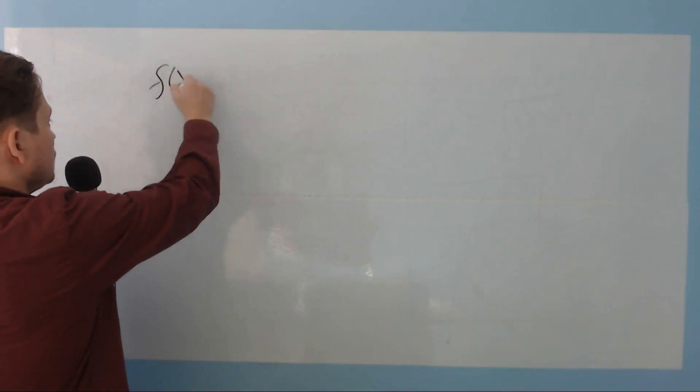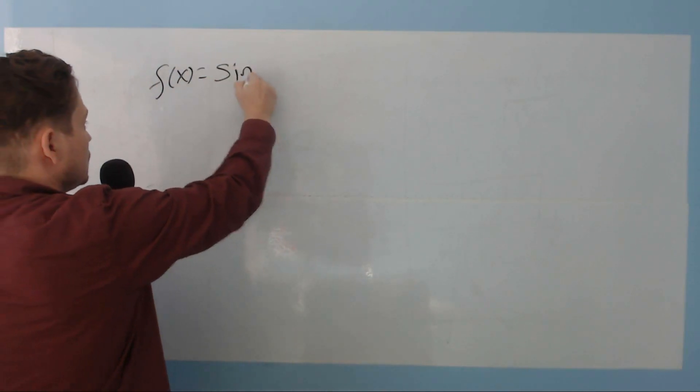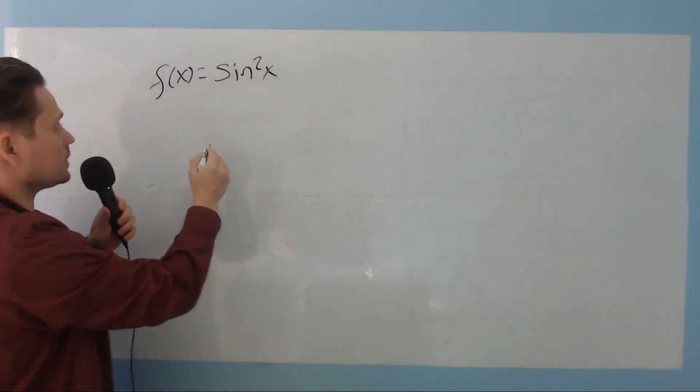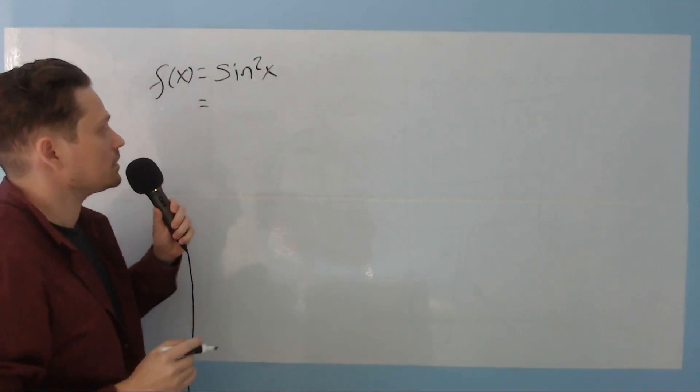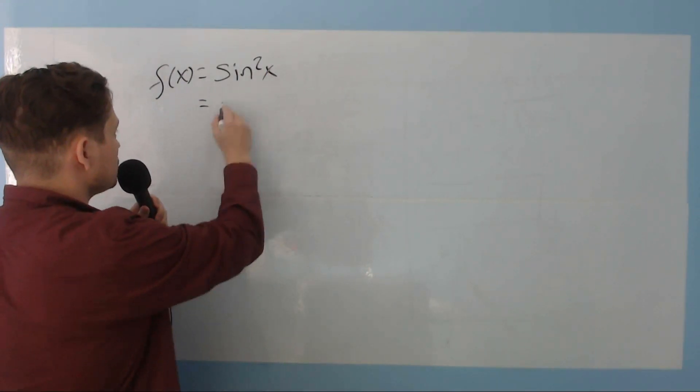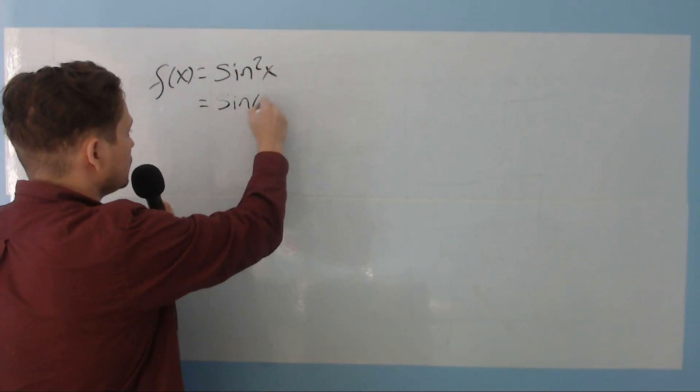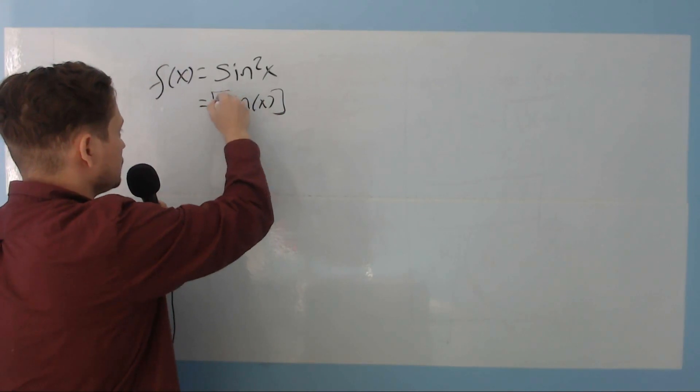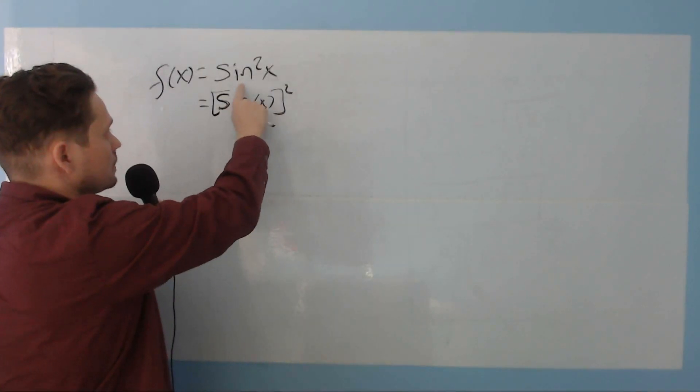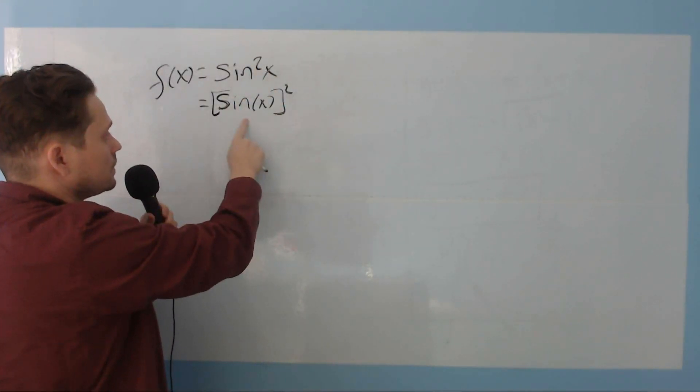So I'm going to begin with f of x equals sine squared of x. And often, it's helpful if you first rewrite this so that it looks like this instead. Sine of x, and then you put the square on the outside, because that's what this notation means. Sine with the 2 and x means sine of x, and then squared.